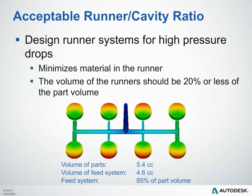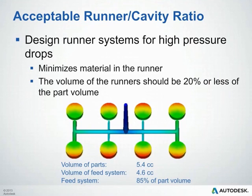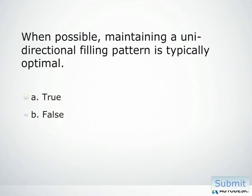For our final design principle, you want to make sure you have acceptable runner to cavity ratios. The ratio of the volume of the feed system to the total volume of the cavities should be as low as possible, to reduce material wasted in the runners and the amount of regrind you have to deal with. In the following image, the runners cannot be made much smaller and still maintain a balanced fill and acceptable packing — in this example, the ratio of runner to cavity volume is 85%, which is pretty high. Ideally, the volume of the runners should be 20% of the part volume or less.